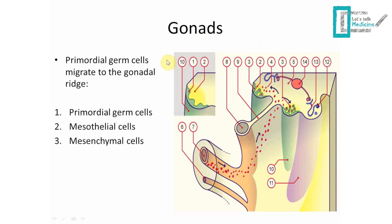The first thing we want to talk about is the gonads. Primordial germ cells migrate to the gonadal ridge — the red dots here represent the primordial germ cells. They migrate through the vitelline duct and into the gonadal ridge, which is the green part shown at number 10. In the gonadal ridge you'll find three kinds of cells. The primordial germ cells, which just migrated, will give us the future gametes: spermatogonia in males and oogonia in females.